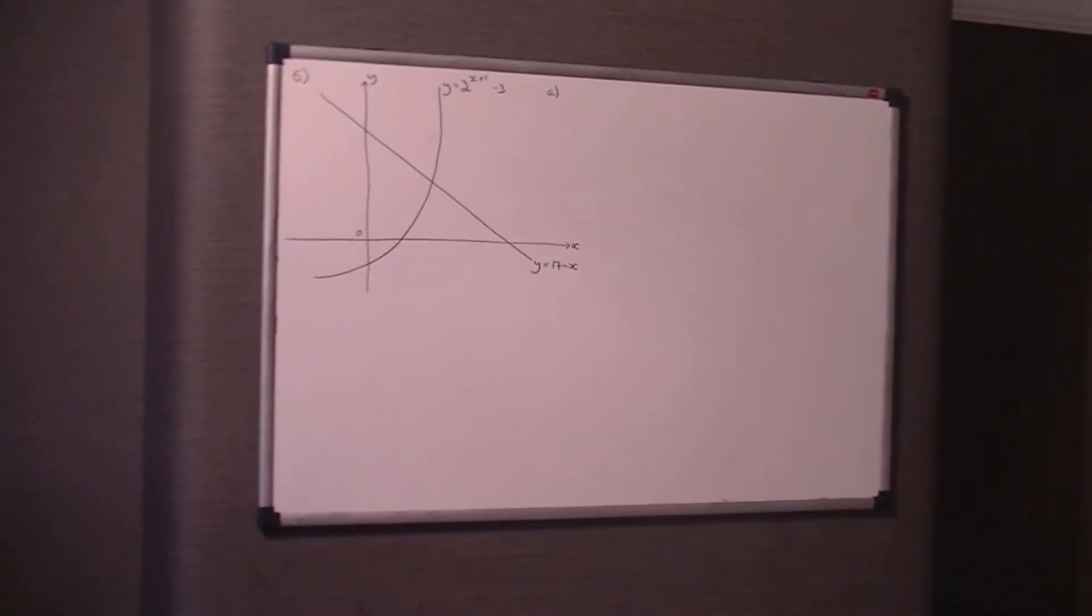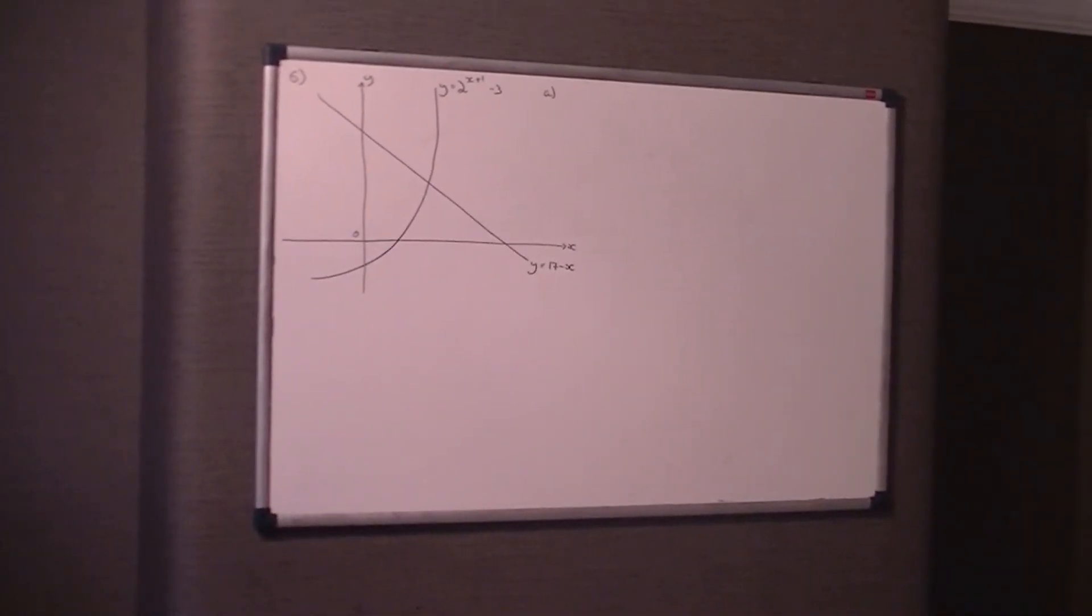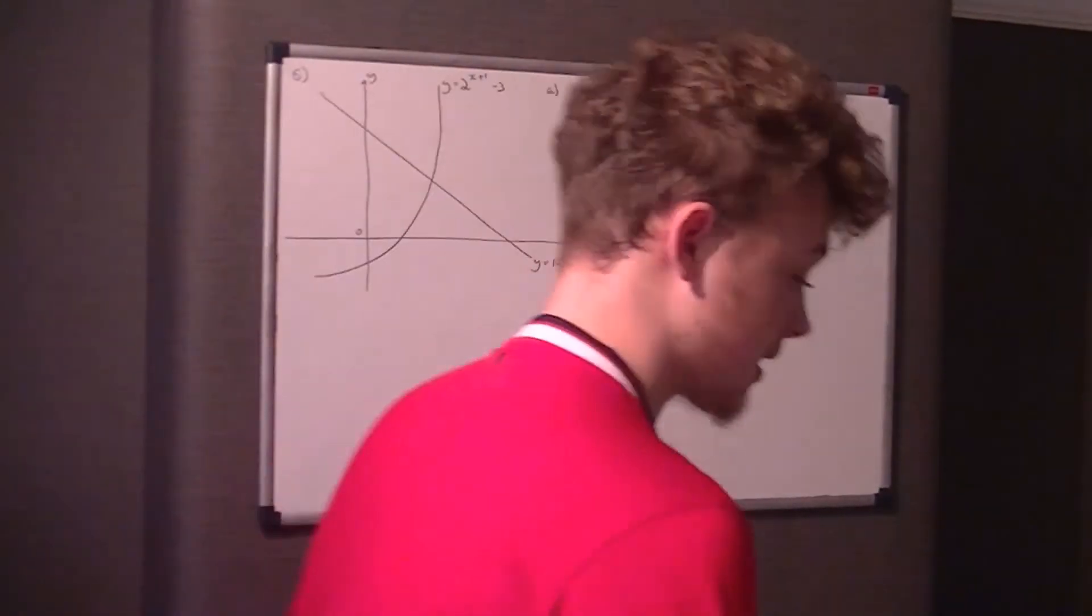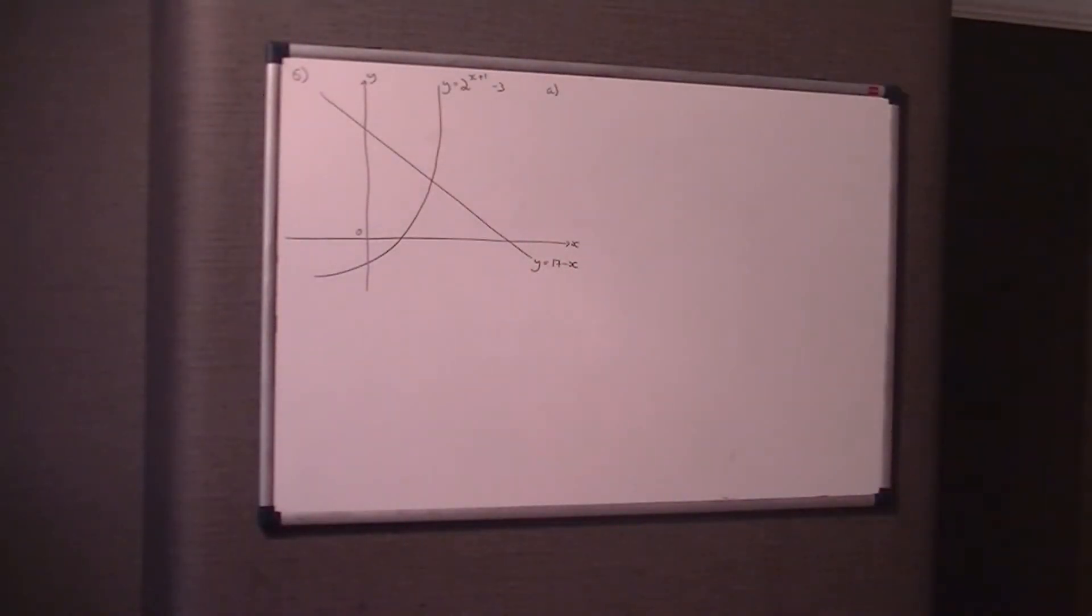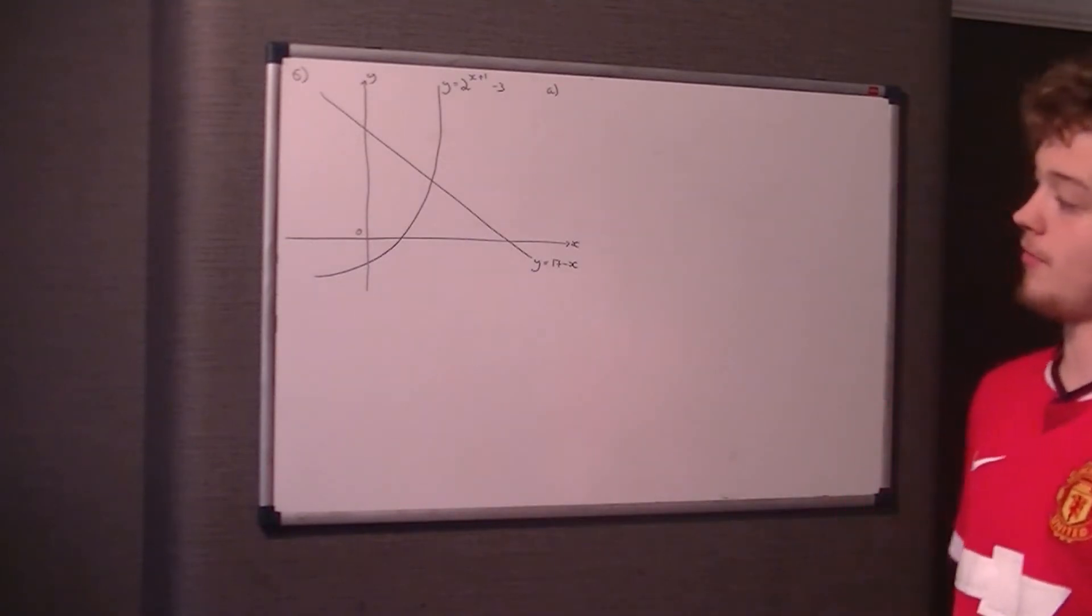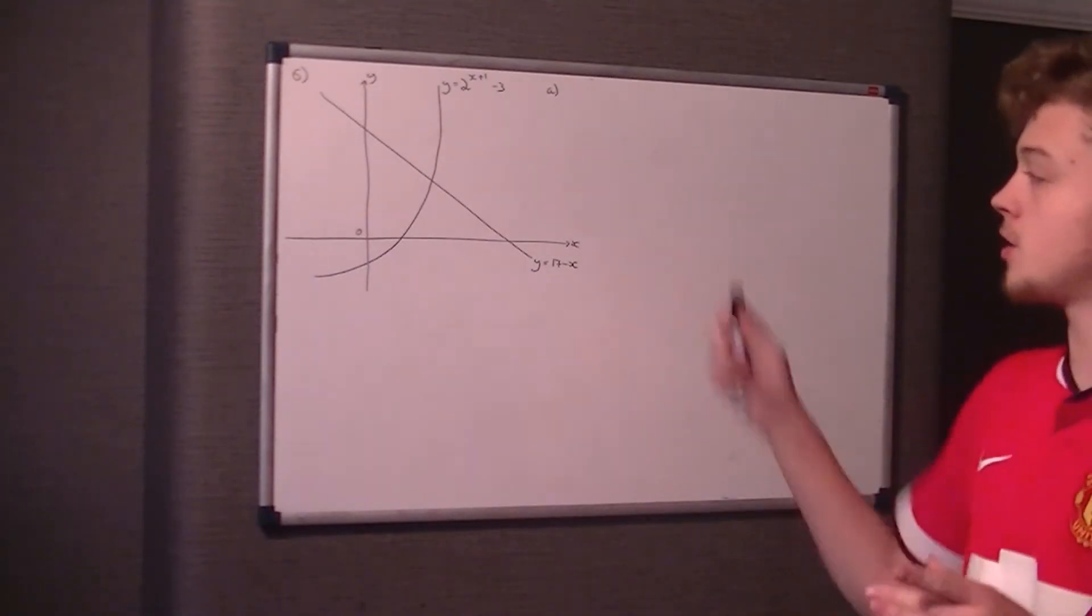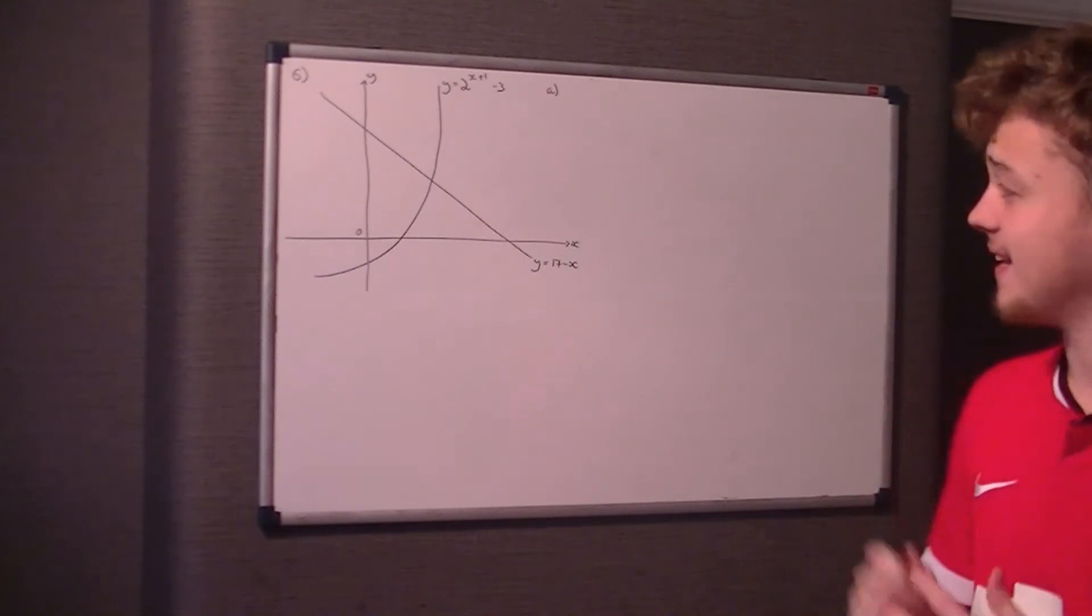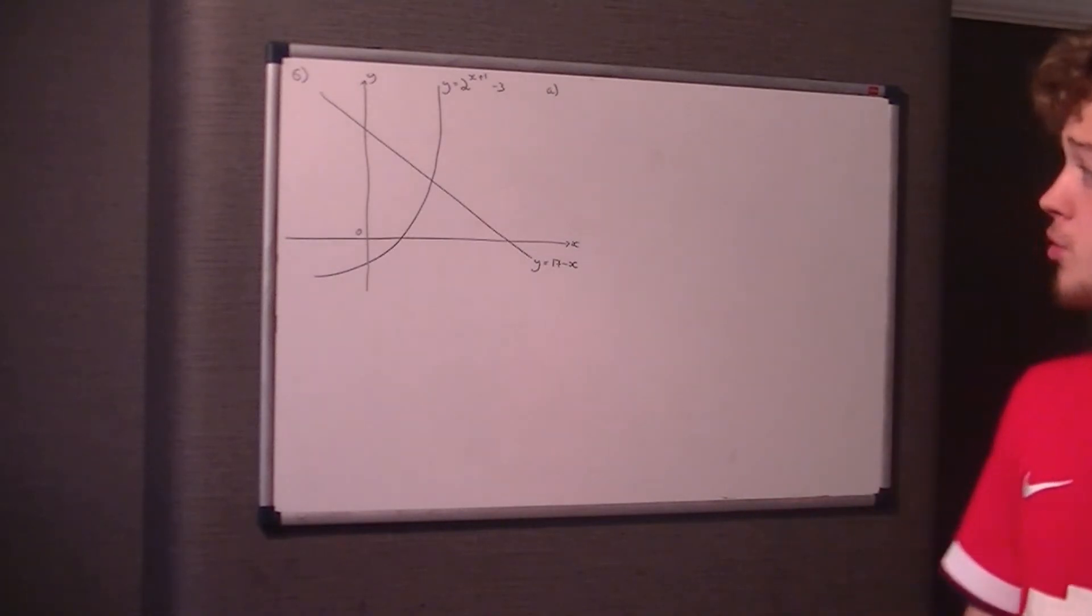Right, this is now question number 6 for Edexcel C3, the June 2015 paper. We're given this weird looking graph here with two curves: y equals 2 to the power of x plus 1, minus 3.